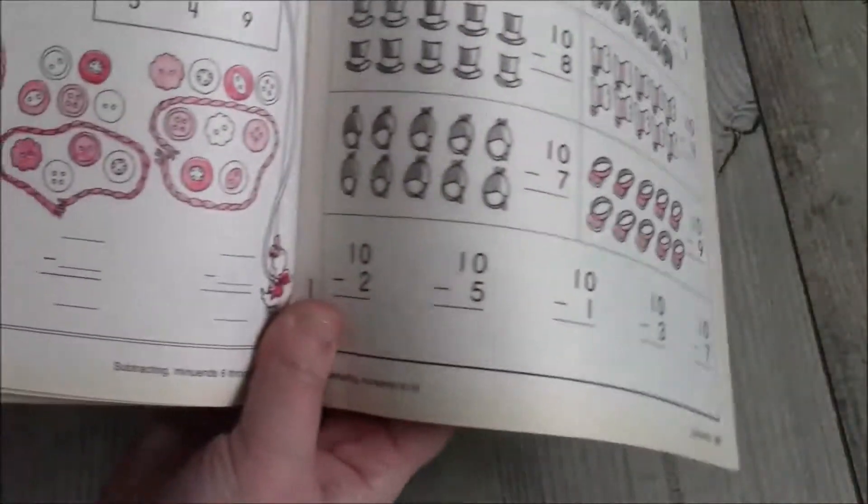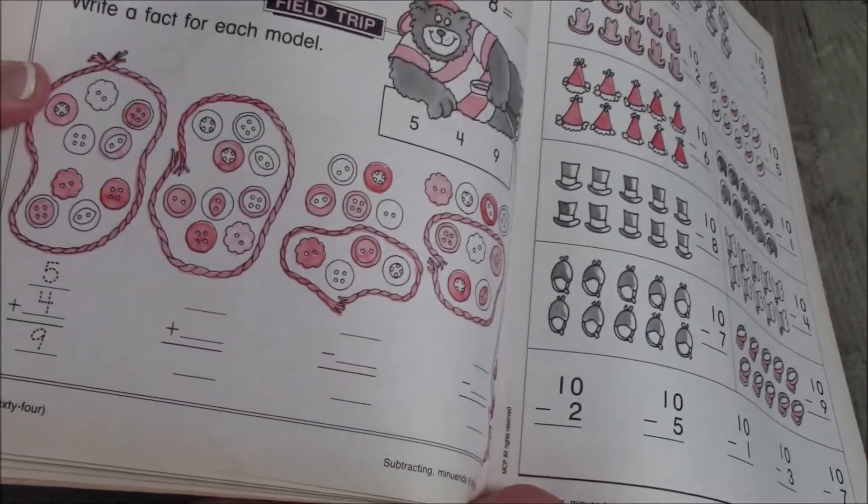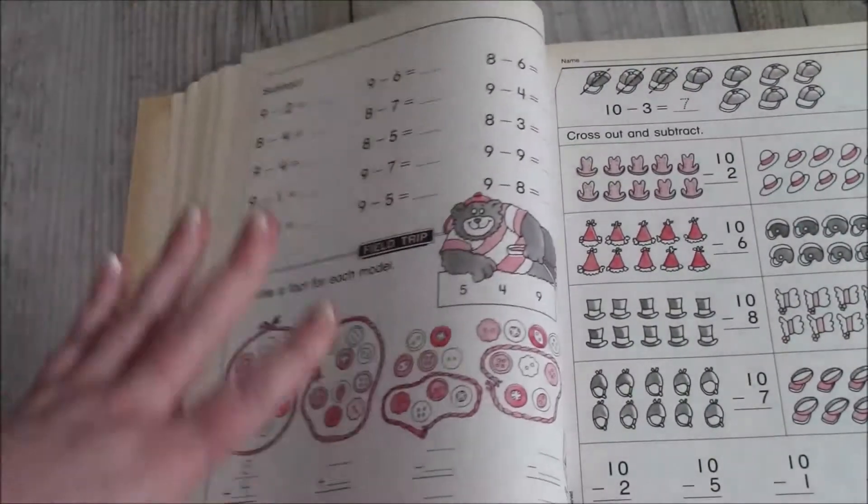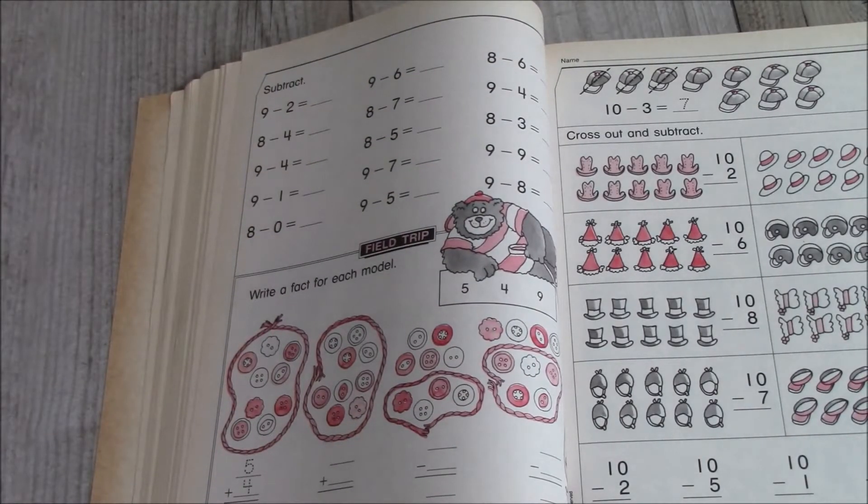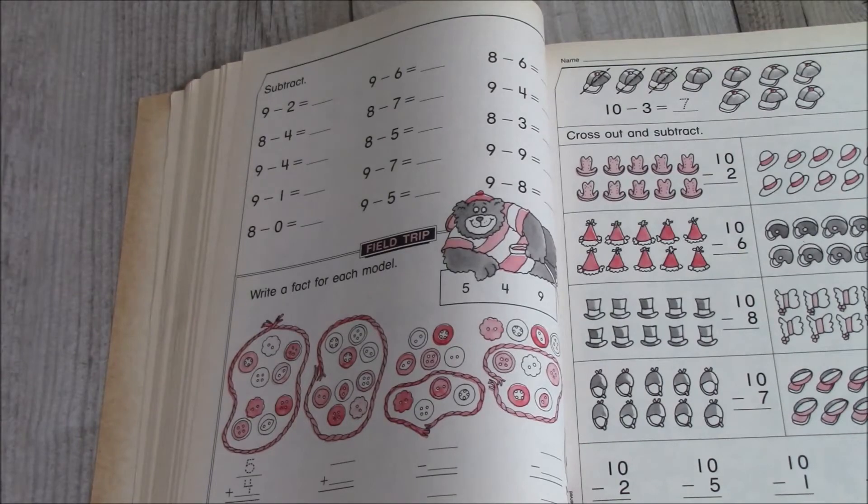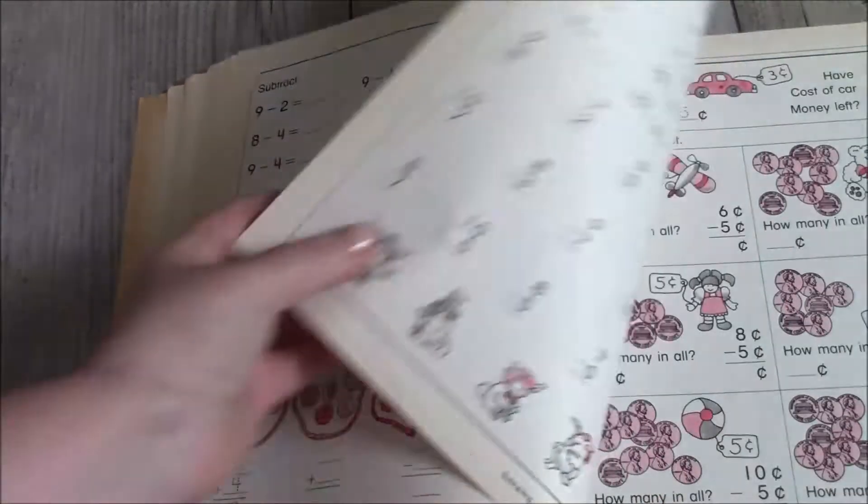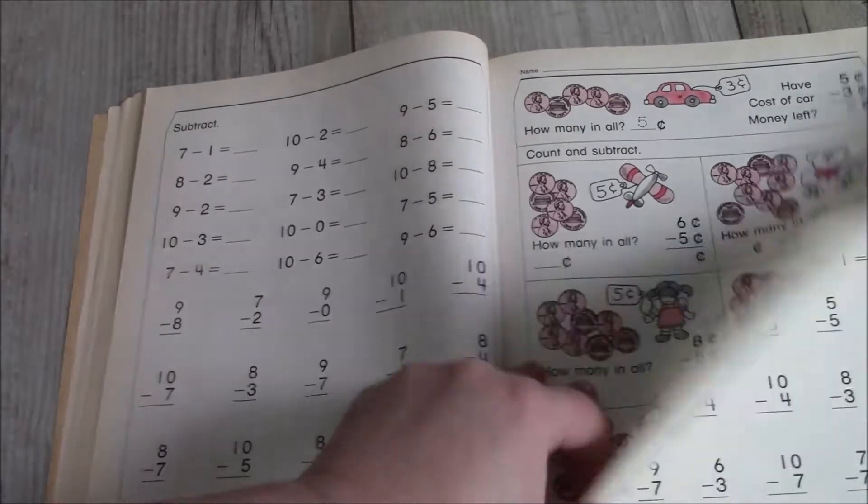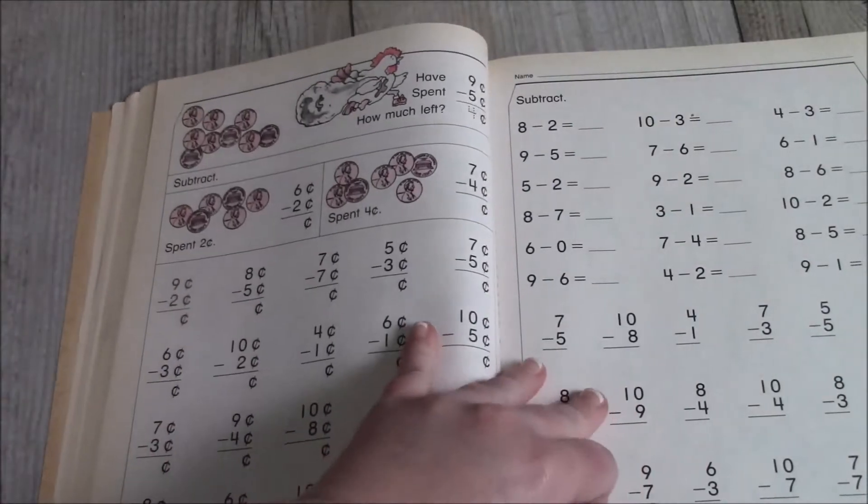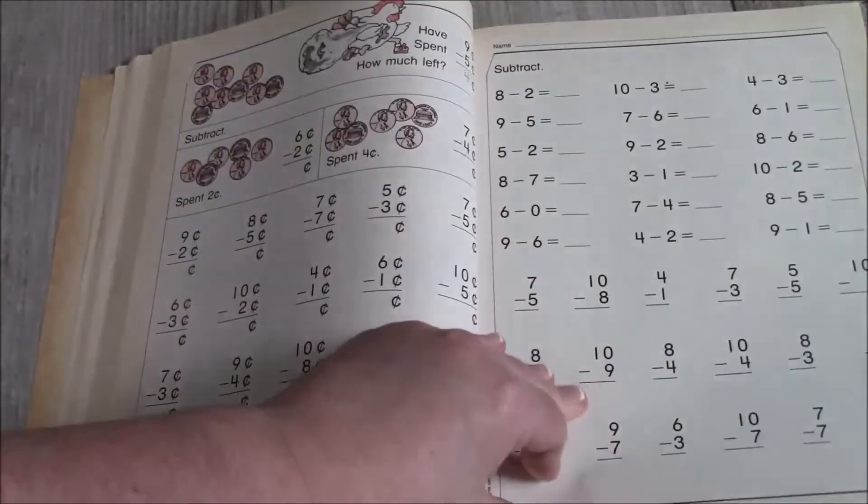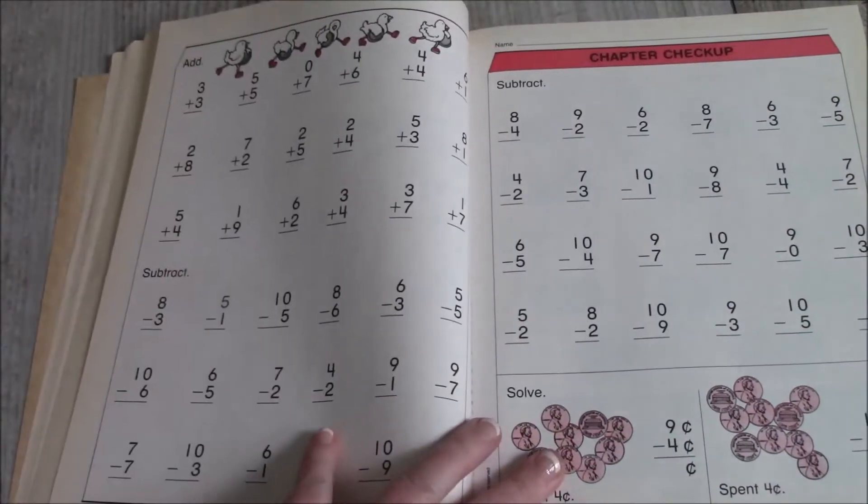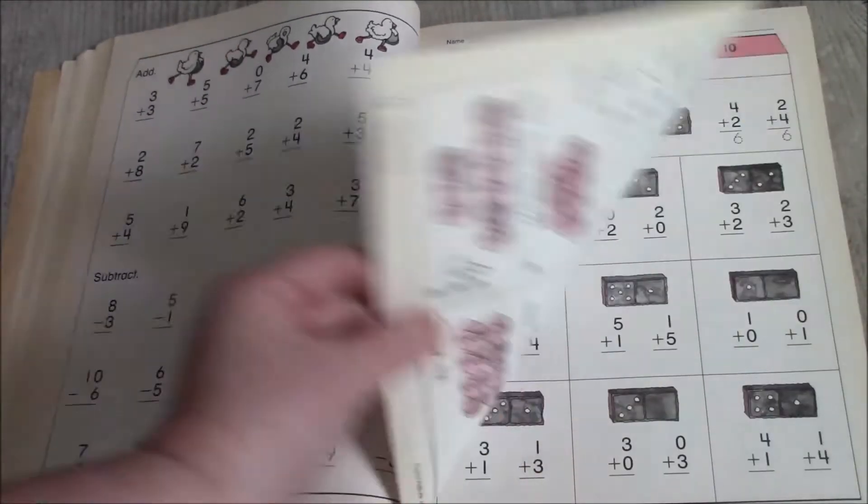And then write a fact model for each problem. Again, if you have a kid that loves math, this may be fun for them. But to be honest, my kids, their goal is to have mom say, you don't need to do this. So each chapter has a few of those field trips. And then again, we'll have another chapter checkup.